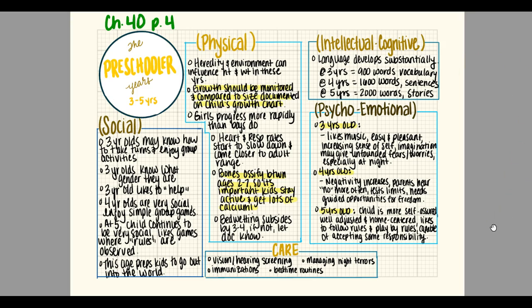For care, preschoolers need vision and hearing screenings — hearing screenings are done at birth but need to be repeated at this age. They may need some help managing night terrors. They need a round of immunizations, which we'll discuss in depth shortly. They also need a bedtime routine established by this age.